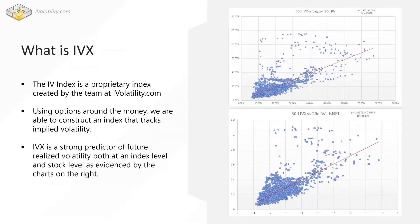The way it works is simple: we use options mostly around the money, with a special weighting method that allows us to construct an index tracking implied volatility. The IVX index is a very strong predictor of future realized volatility. If you take the IVX level today and compare it with realized volatility over that same period 20 trading days later, you'll find that more than 50% of the total variance of realized volatility was explained by the IVX.